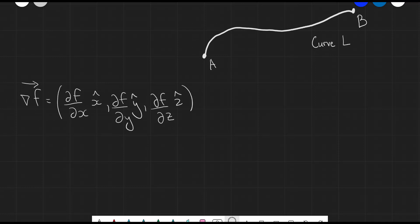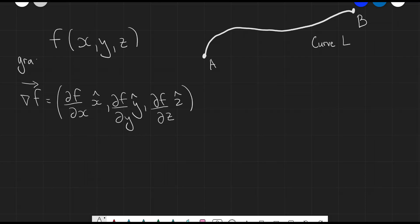Let's start with the line integral. Imagine that we have a curve L — this could be of any random shape, any random direction — just a curve between two points A and B. Imagine we also have a scalar function or scalar field along here which depends on X, Y, and Z. We can define the rate of change of that scalar field as simply the gradient, or grad F, which is just a vector.